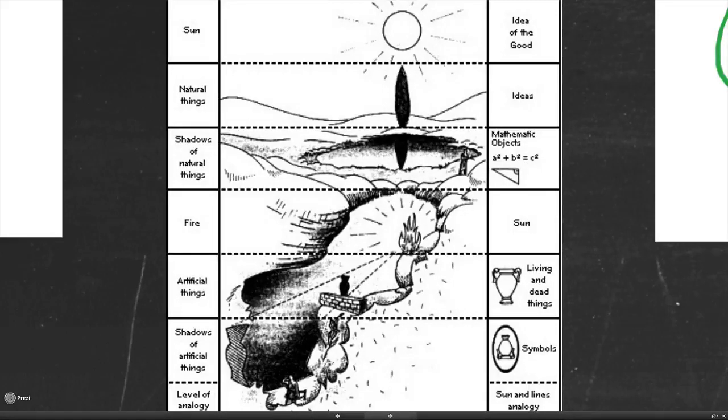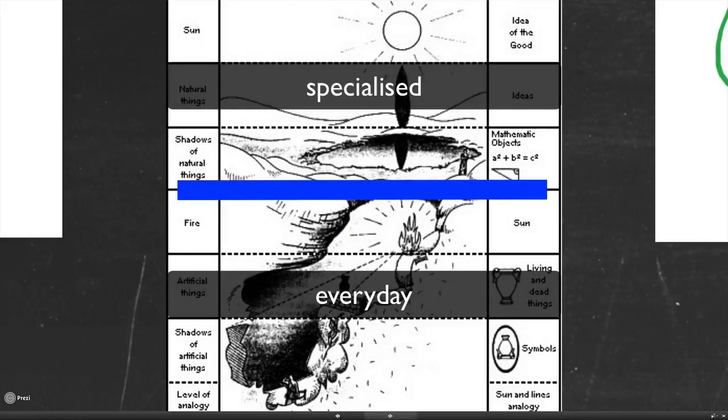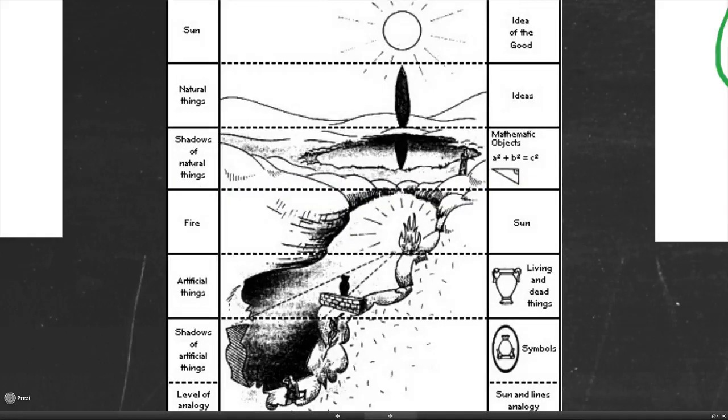Now, that world for Plato is an abstract world. It's a specialized world. It's a world of mathematics. It's a world of abstract ideas. And it's the world of the principle of the good, which informs everything just as the sun warms the earth.